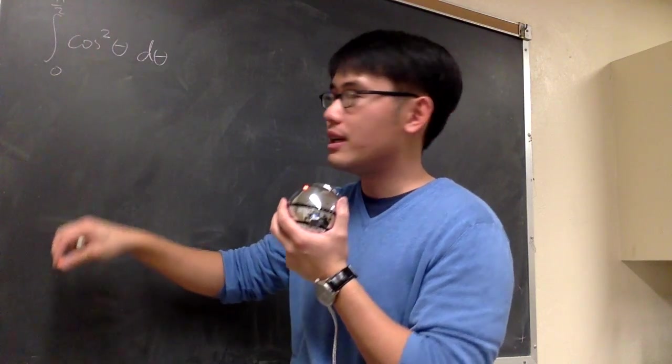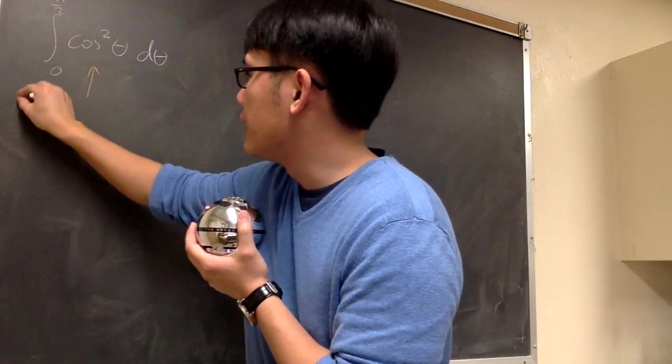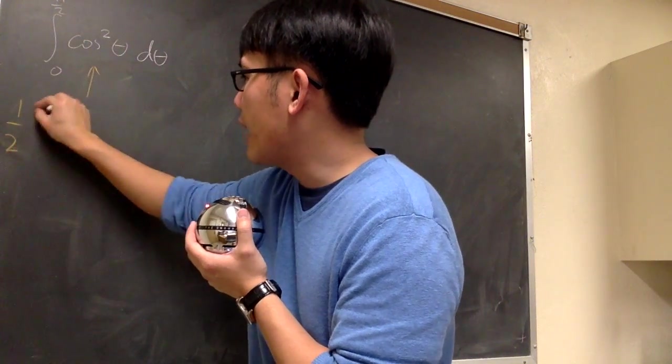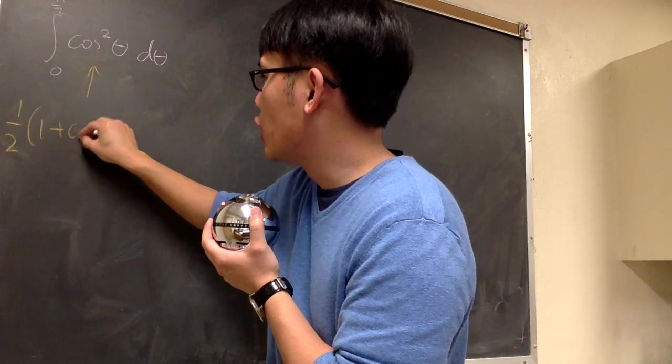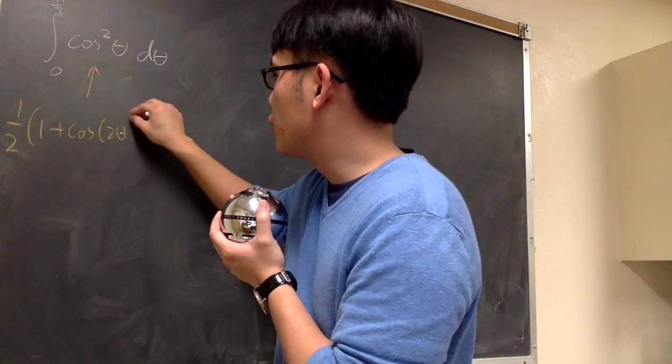We can reduce the power. And the identity that we can use right here, right away, is cosine squared is the same as 1 half times 1 plus cosine of 2 theta.